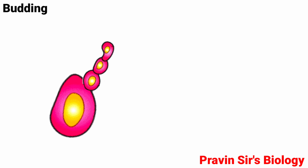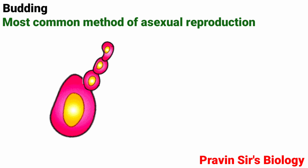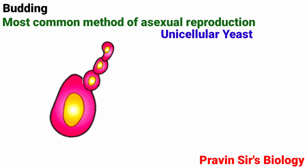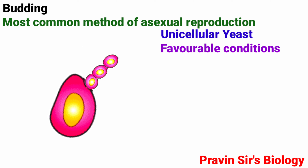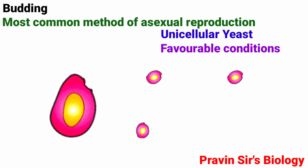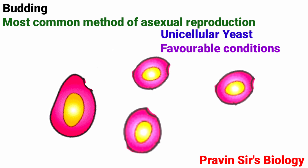Budding: It is the most common method of asexual reproduction in unicellular yeast. Usually it takes place during favorable conditions by producing one or more outgrowths called buds. These buds, on separation, develop into new individuals.